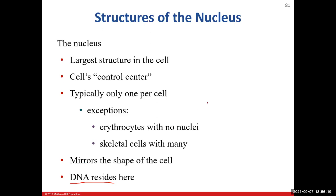Most cells have one nucleus, but there are exceptions. Mature erythrocytes — red blood cells — do not have a nucleus. Skeletal muscle cells can be multinucleated, and cardiac cells can have up to two nuclei. For the most part, most cells have one nucleus, and as we learned with epithelial tissue, the shape of the nucleus tends to mirror the shape of the overall cell.